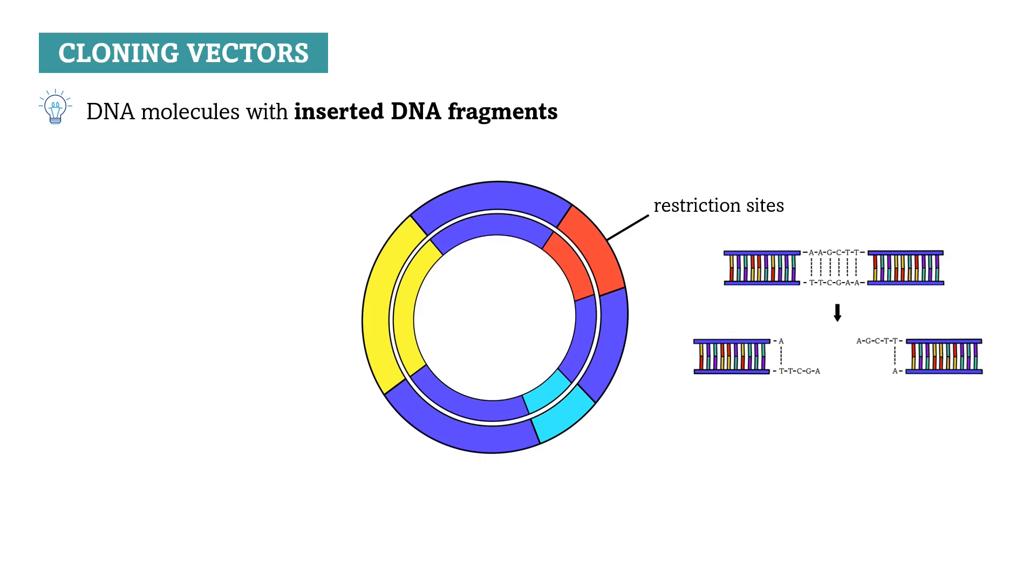The second important characteristic cloning vectors need to have is an origin of replication, which allows them to replicate within the host cell, because we want them to replicate the DNA we've chosen, and if they cannot replicate, then they would just be useless, right?